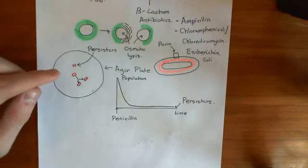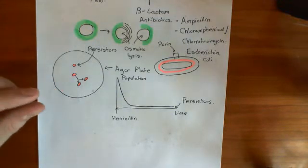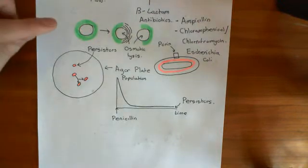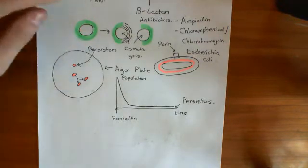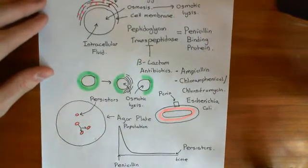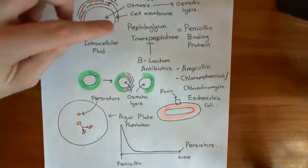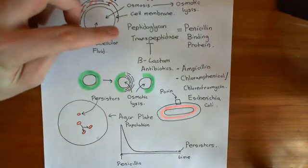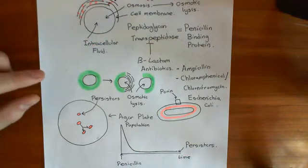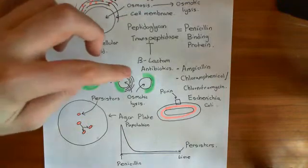Penicillin is only really effective at killing bacteria if they are dividing, because if the bacterium is not dividing, then it already has a viable cell wall which is functioning perfectly well and preventing osmotic lysis. So blocking the peptidoglycan transpeptidase enzyme isn't going to affect the ones that are not dividing.